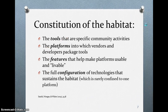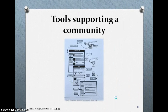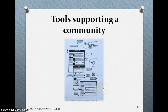The constitution of that habitat includes tools that are specific to community activities, platforms into which vendors and developers package tools, features that help make platforms usable and livable, and the configuration of technologies that sustains the habitat. Here you see a chart from page 39 in your text that shows tools that help support the community. With the wiki board, you have discussion and wiki tools that help make it function. And on the web board, you have a member directory, discussion, and chat. So all these things help support the community.